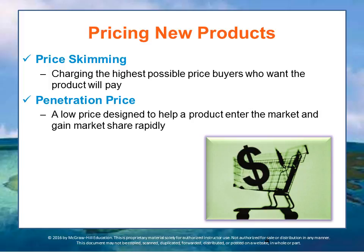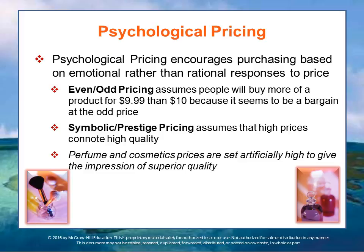There are other pricing strategies as well. Psychological pricing encourages purchases based upon an emotional rather than a rational response to the price. For example, the assumption behind even-odd pricing is that people will buy more of a product for $9.99 than for $10 because it seems to be a bargain at an odd price. The assumption behind symbolic or prestige pricing is that high prices connote high quality — thus, the prices of certain fragrances and cosmetics are set artificially high to give the impression of superior quality.